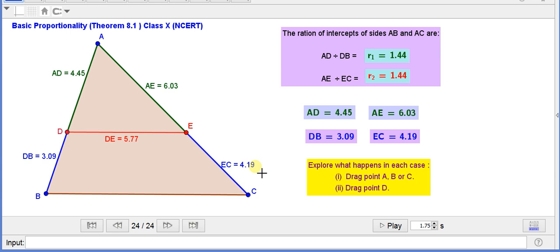These values we can see here also. And their ratios, ratio of AD by DB is given here and AE by EC is given as R2 and it is 1.44, and R1 is also 1.44.